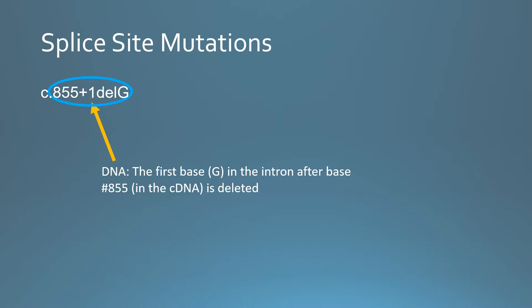What does that mean? The DNA numbering is for the final version of the DNA after all of the introns have been taken out. But since this mutation is actually in an intron, you take the closest DNA base that's not in an intron and count into the intron. So 855 is the end of an exon, and then counting one base into the intron — it's missing a G, so it doesn't splice correctly.